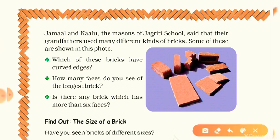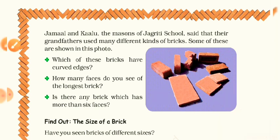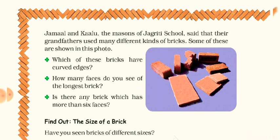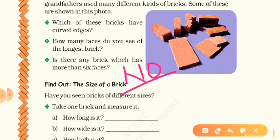How many faces do you see of the longest brick? If you take the thin brick as the longest, you can see face one, face two, and if you are able to see another side, that is the third. Similarly for this brick you can count three faces. Is there any brick that has more than six faces? No — there is no brick with more than six faces. The total number of faces in a brick is six.